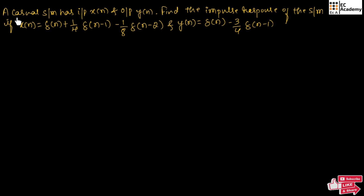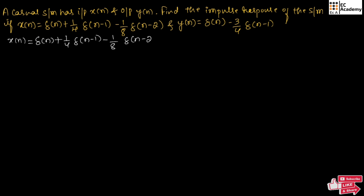A causal system is given with input x[n] and output y[n]. We need to find the impulse response of the system if x[n] and y[n] are given. Let us consider x[n] given as: delta[n] plus 1/4 delta[n-1] minus 1/8 delta[n-2].